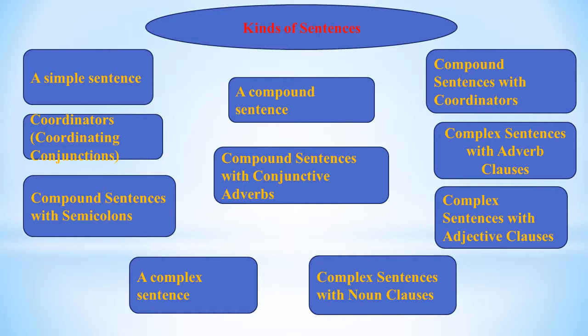A second way to form a compound sentence uses conjunctive adverbs: independent clause + semicolon + conjunctive adverb + comma + independent clause. For example: 'Salt water boils at a higher temperature than fresh water; therefore, food cooks faster in salt water.' Several transition signals such as 'on the other hand,' 'as a result,' and 'for example' act like conjunctive adverbs and can also connect independent clauses with a semicolon and comma.